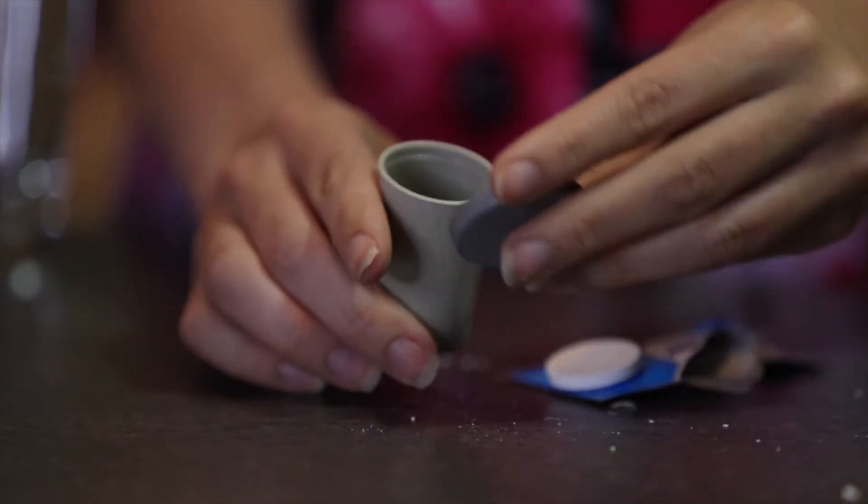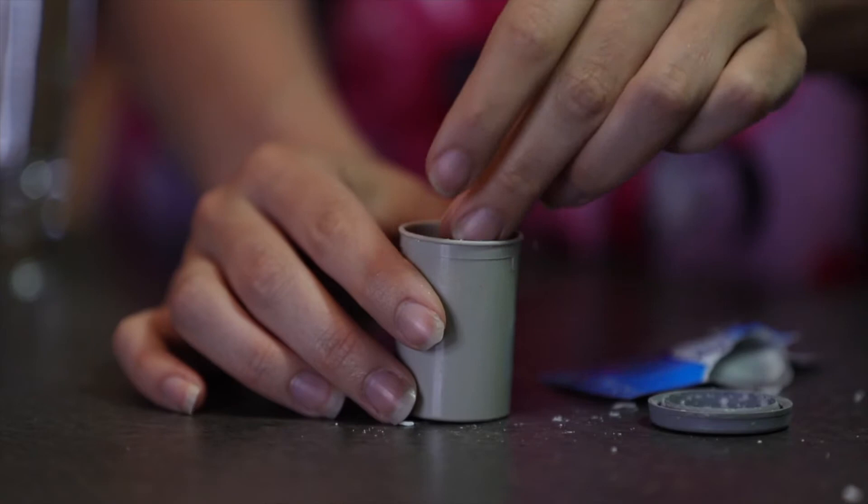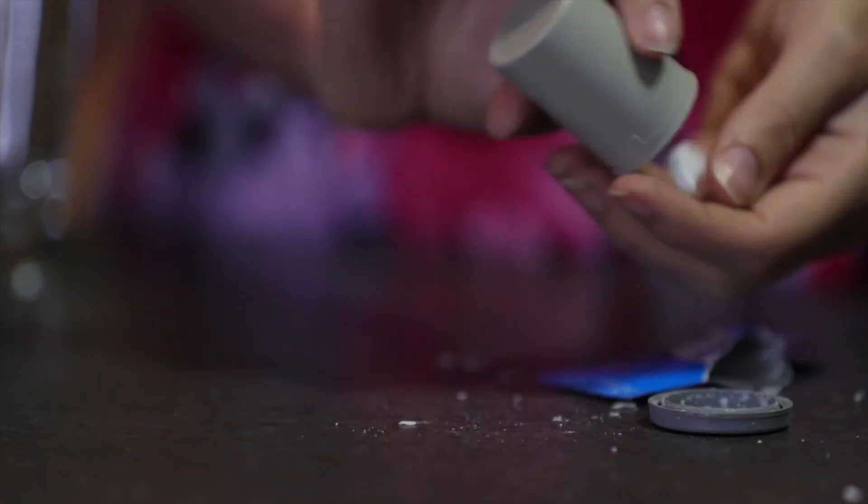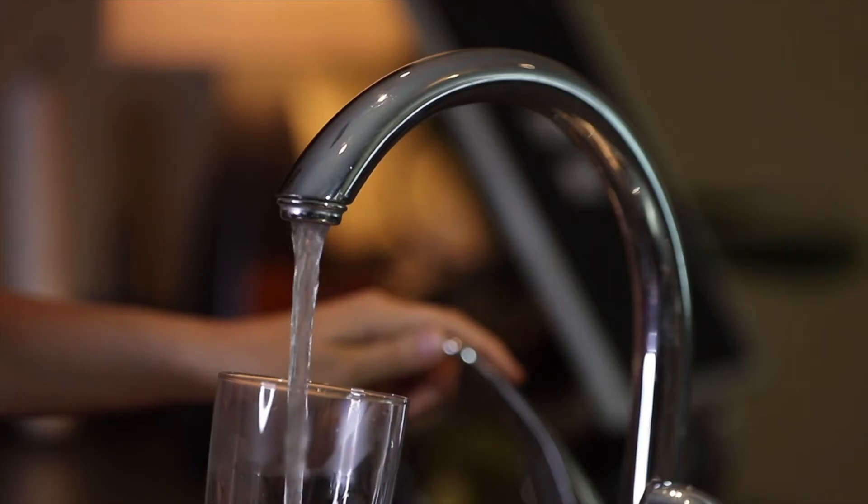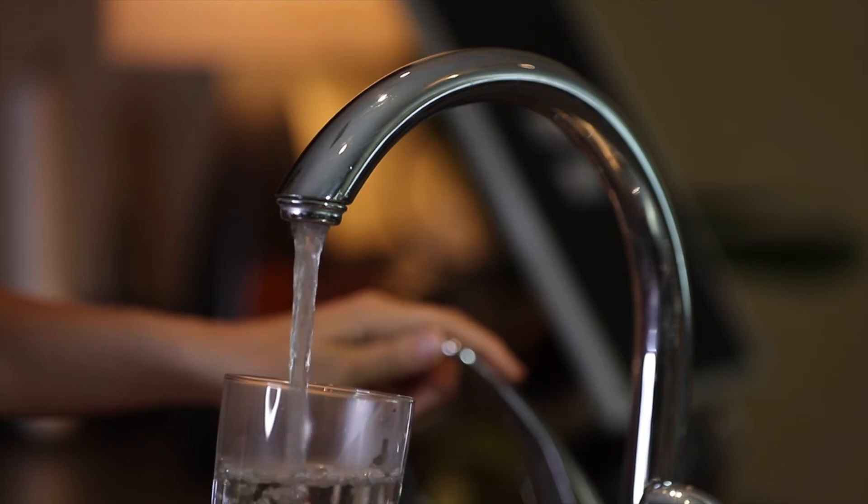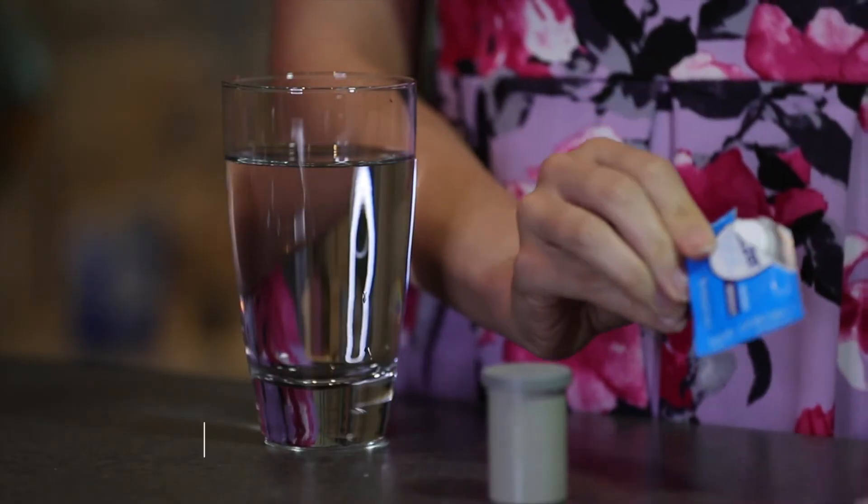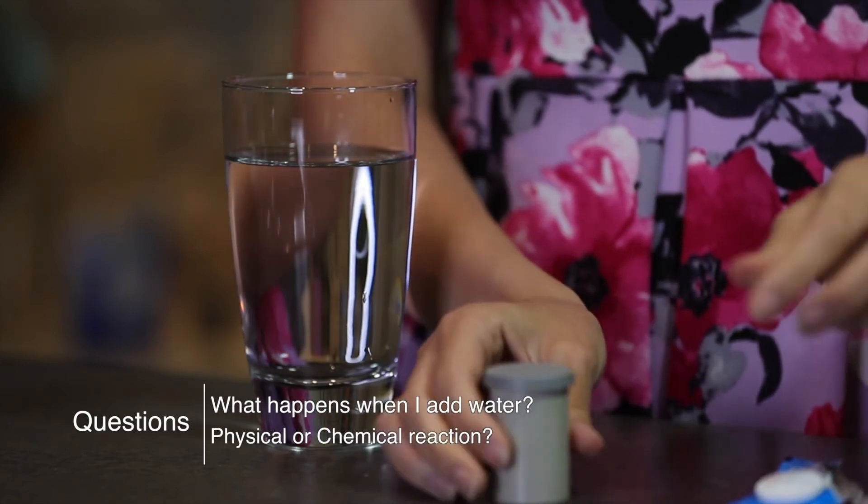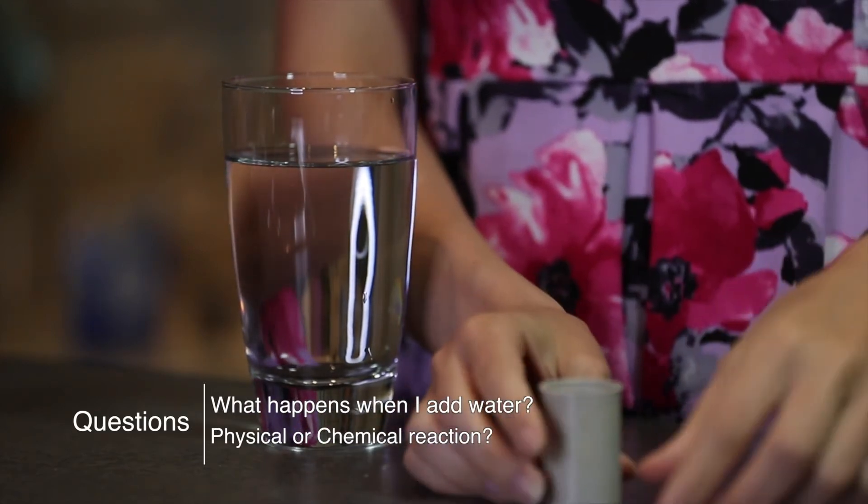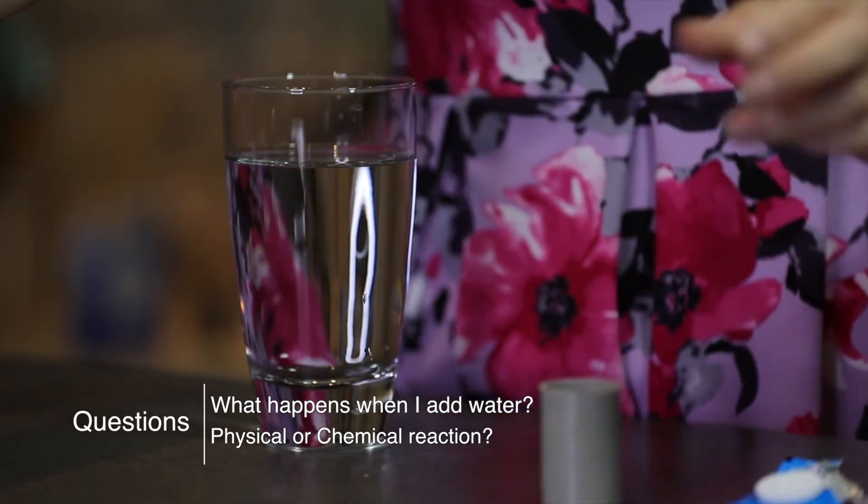A prescription bottle without a child lock would also work. So first, you're going to place one of those Alka-Seltzer tablets inside the container. Before you put the water in, use the scientific method to think about what's going to happen and ask yourself a few questions. What will happen when I add the water inside the container with the Alka-Seltzer tablet? Will it be a physical reaction or a chemical reaction?